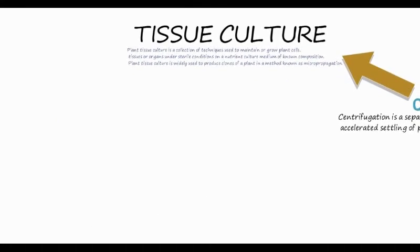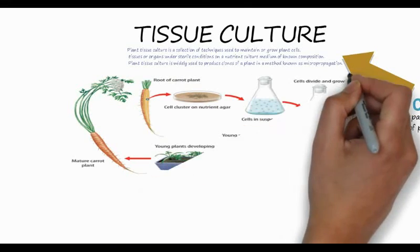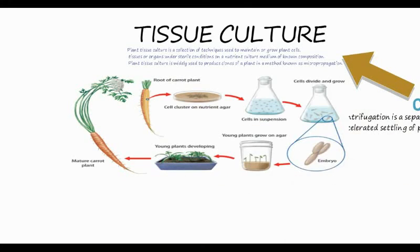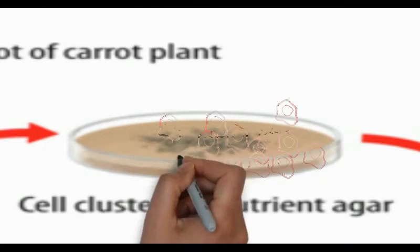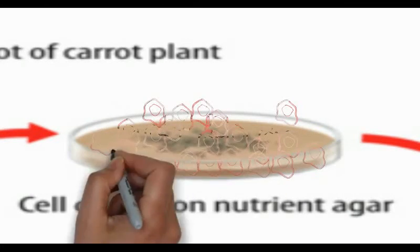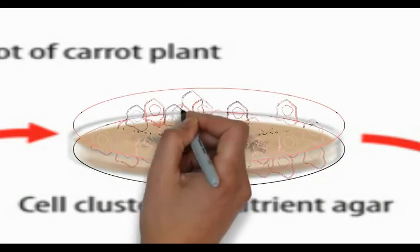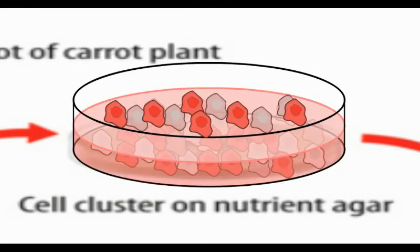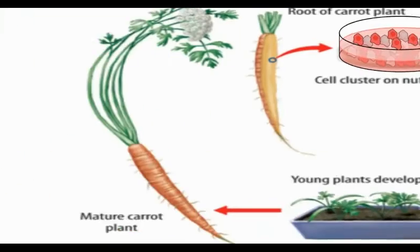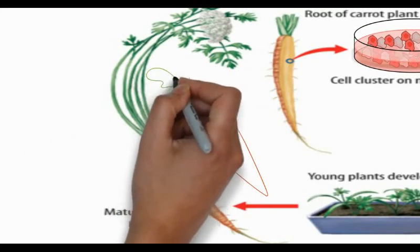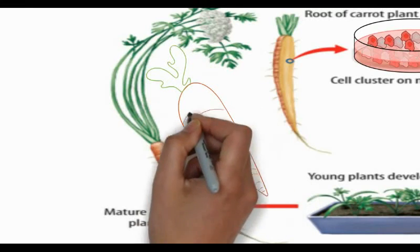For example, we take the carrot root and the cell cluster, place them in nutrient agar in a petri dish, and the cells will grow in the media. The cells then form an embryo and eventually develop into a mature carrot plant.